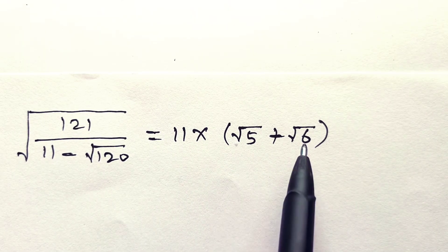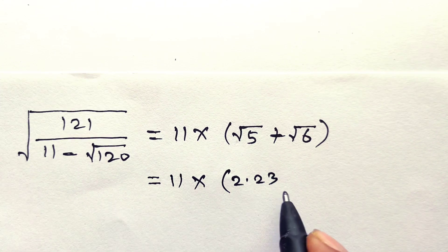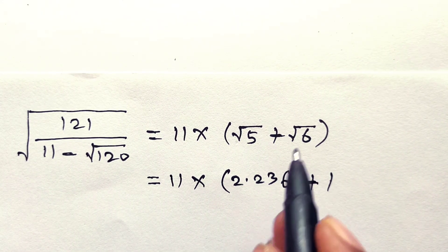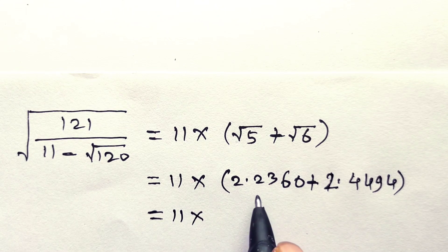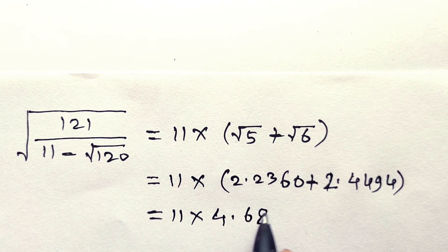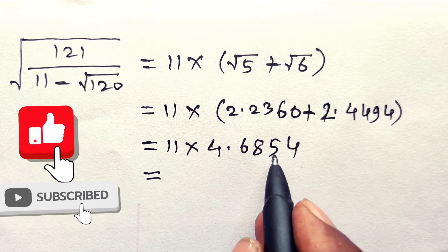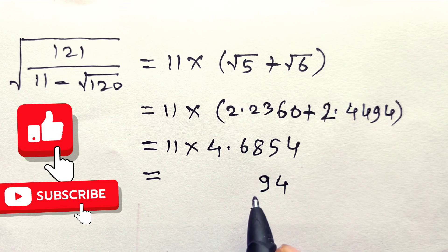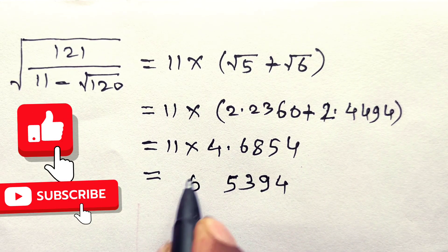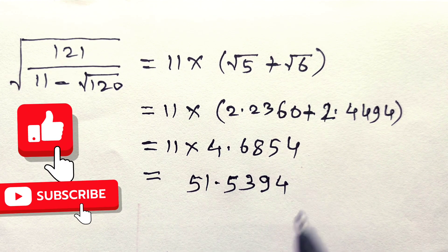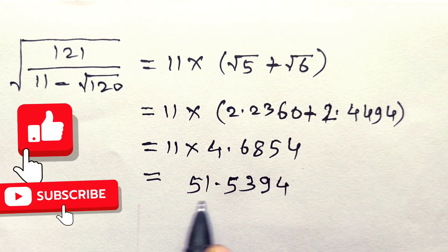Let us put the values of square root of 5 and square root of 6 here. So this is equal to 11 into (square root of 5 is 2.2360 plus square root of 6 is 2.4494). Taking the sum of these two numbers: 2.2360 plus 2.4494 equals 4.6854. So 11 into 4.6854 equals 51.5394. Hence the approximate value of the expression is 51.5394, obtained without using a calculator. This is the final answer.